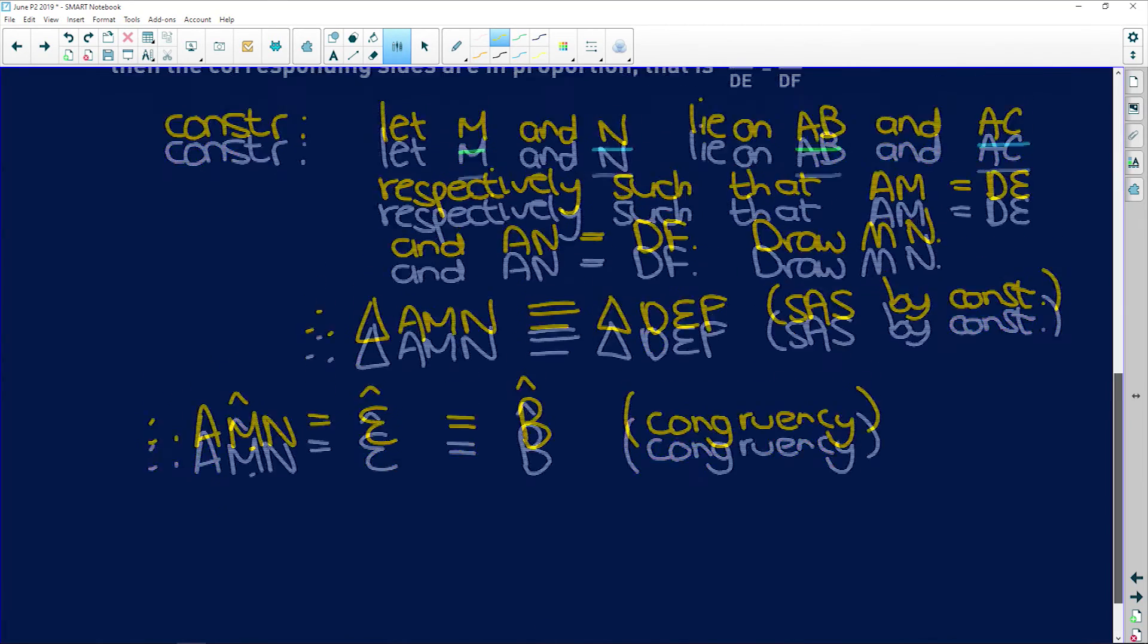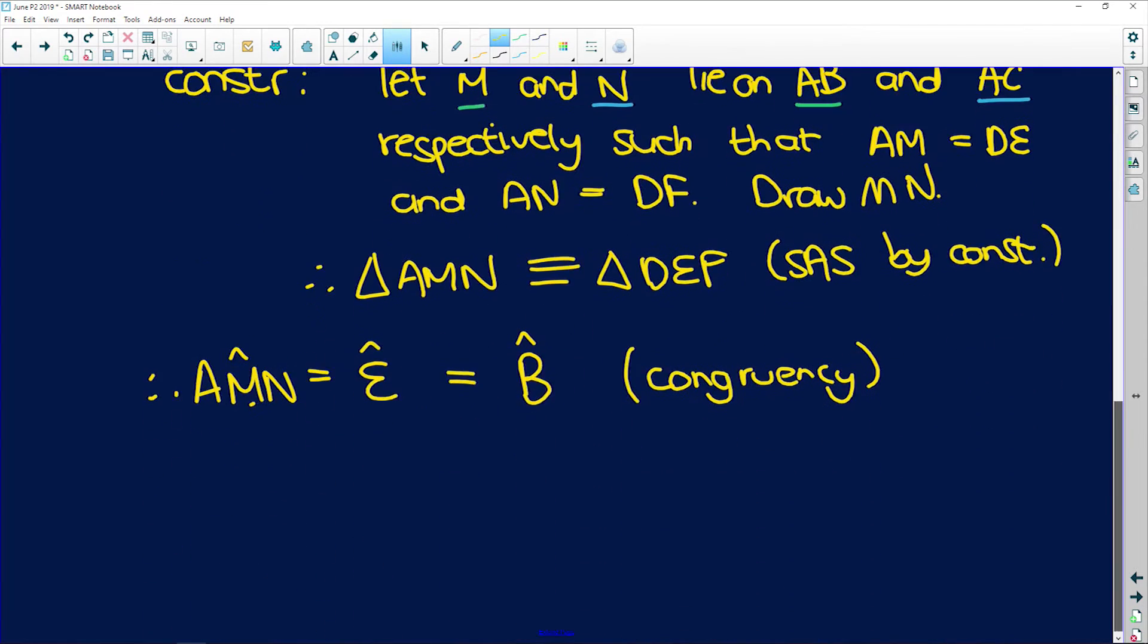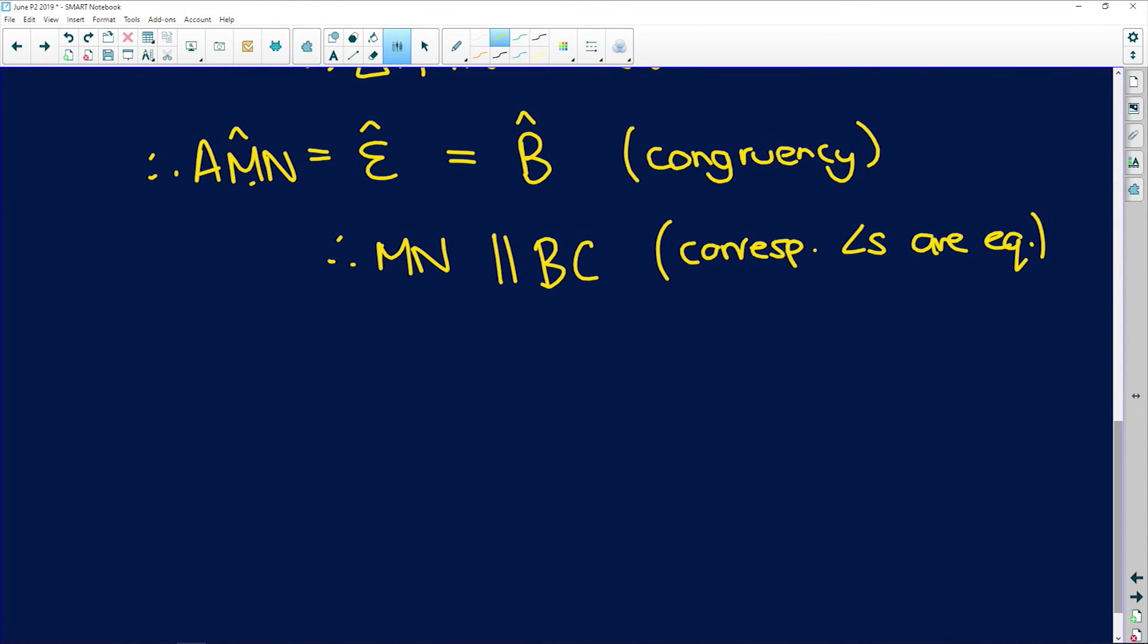Then what we've established, because we've now established that these corresponding angles in this triangle are equal, we can say that these lines are parallel. So now you can say, therefore, MN is parallel to BC, because corresponding angles are equal. Remember with your theorems, you can go backwards, you can say because these angle relationships exist, they are parallel lines.